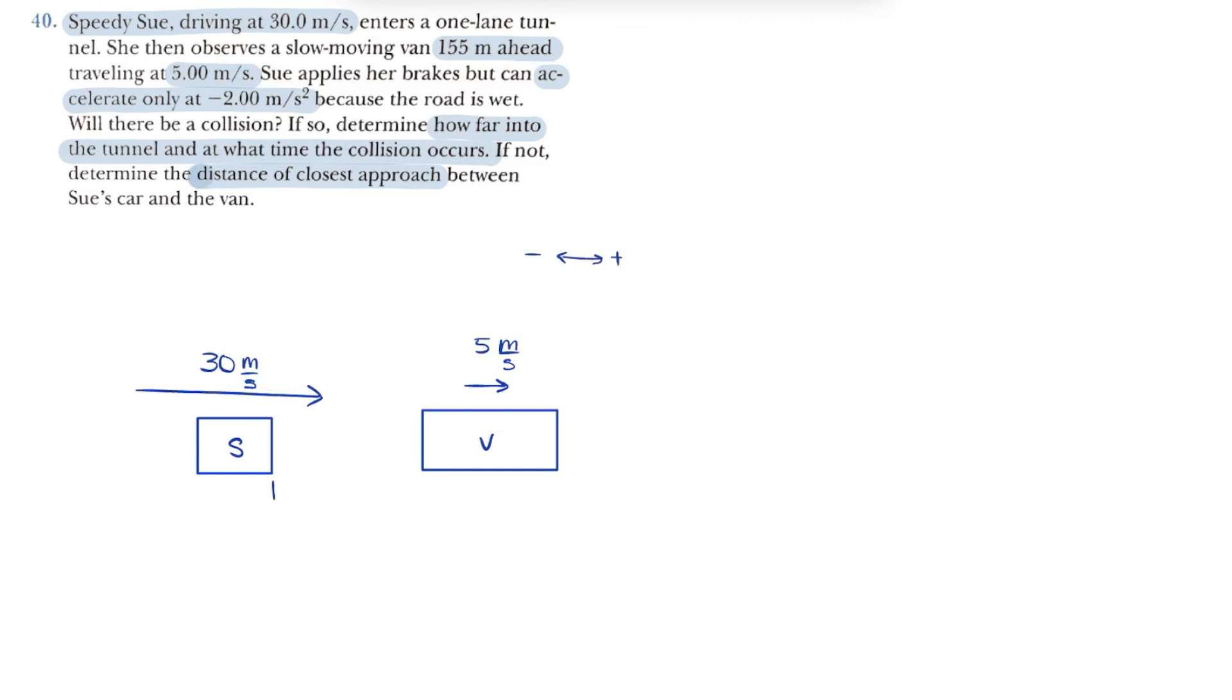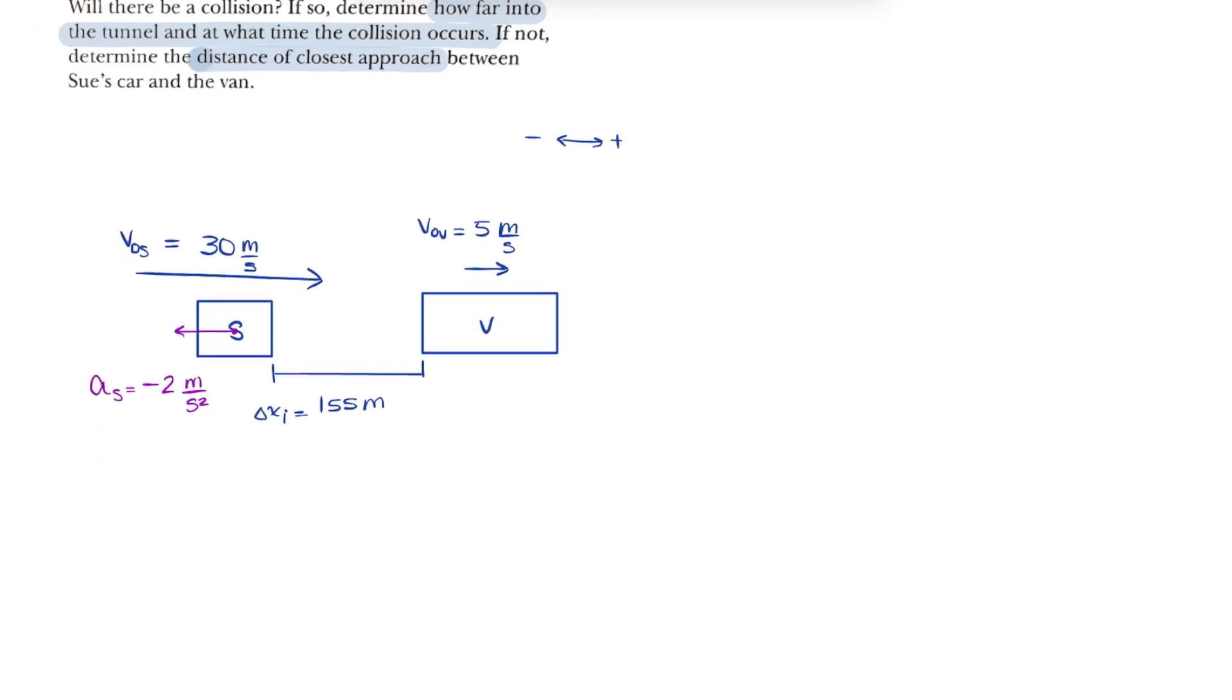Then they are 155 meters apart, and Speedy Sue is slowing down at an acceleration of negative 2 meters per second squared, meaning her velocity is decreasing.